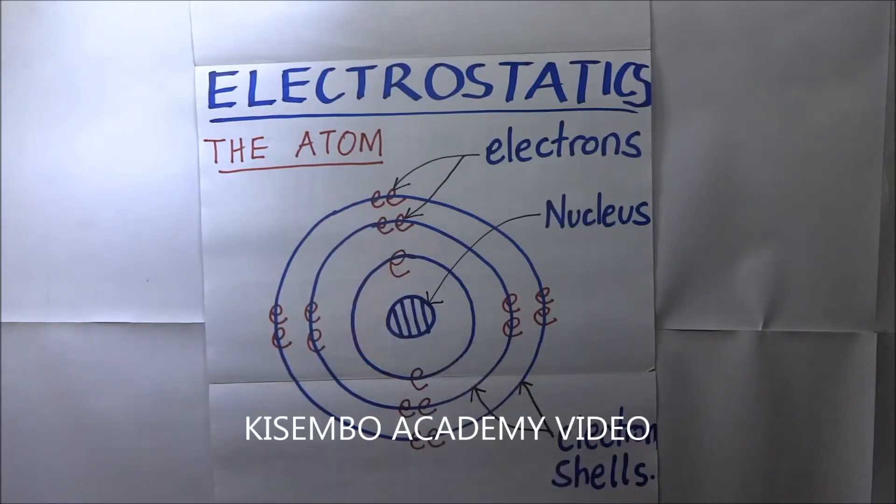These electrons are free-moving, they are always rotating around the nucleus. In the nucleus, we have the neutrons and protons.